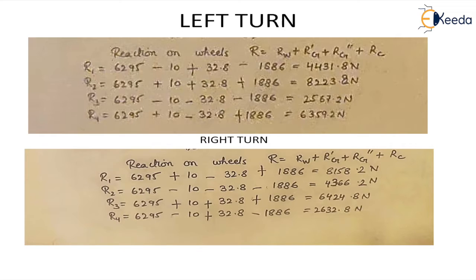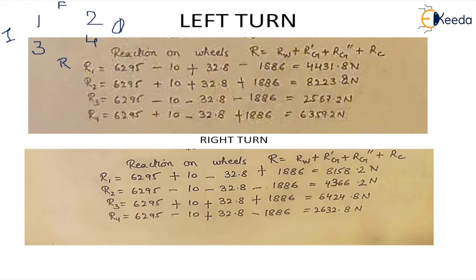Now we find the total reaction on all four wheels — numbered 1, 2, 3, and 4. Wheels 3 and 4 are the inner wheels for a left turn, and 1 and 2 are the outer wheels; 1 and 2 are front wheels and 3 and 4 are rear wheels. The total reaction is the sum of the reaction due to weight, the gyroscopic reaction due to the wheels, the gyroscopic reaction due to the engine rotating parts, and the reaction due to centrifugal force. Substituting all known values and directions gives the final answer.